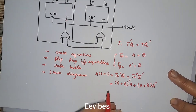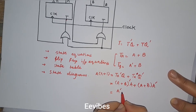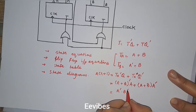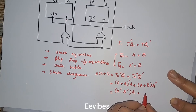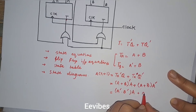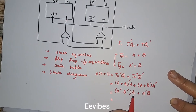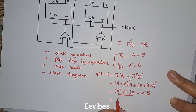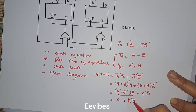Expanding this expression, by De Morgan's law (A + B)' becomes A'B', giving A'B' · A, and the second term (A + B) · A' expands to A · A' + B · A'. Since A · A' = 0, the first term drops out, and further simplification gives us the next state equation: A(t+1) = A'B.